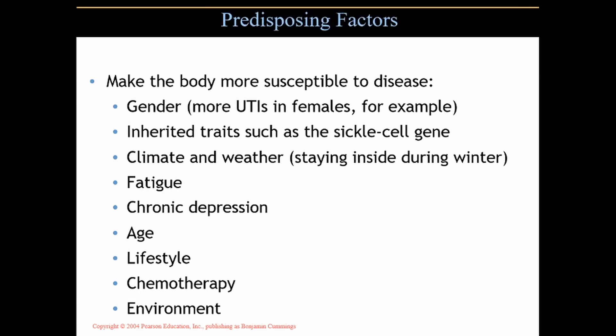Some predisposing factors to disease include gender — for example, UTIs occur eight times more commonly in females than in males due to differences in anatomy, specifically the length of the urethra. Inherited traits, such as the sickle cell gene, can lead to other diseases and predispose someone to other pathogenic microbiological diseases.